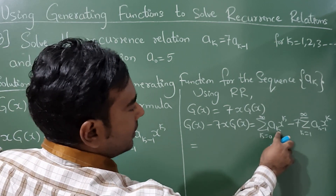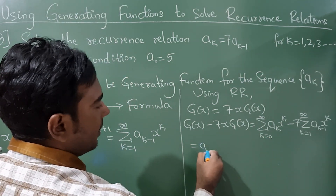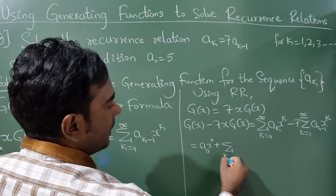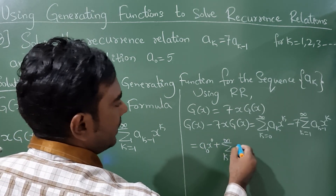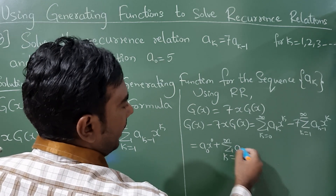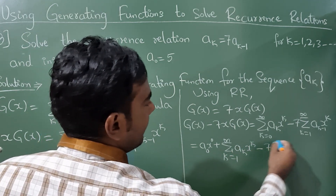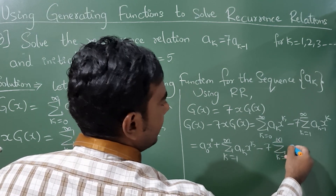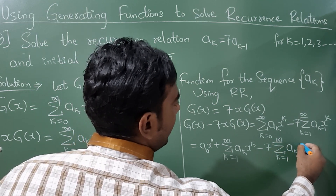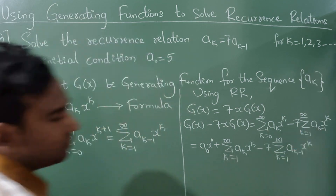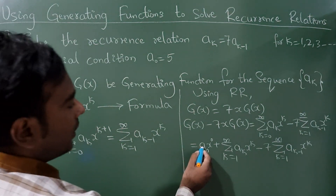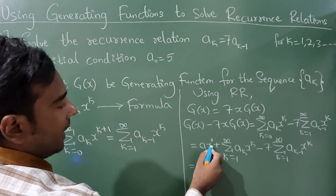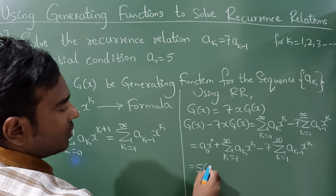Splitting out the k = 0 term gives a_0 · x raised to 0 plus the summation from k = 1 to infinity of a_{k-1} · x raised to k. Since a_0 is 5 and anything raised to 0 is 1, this term becomes 5.